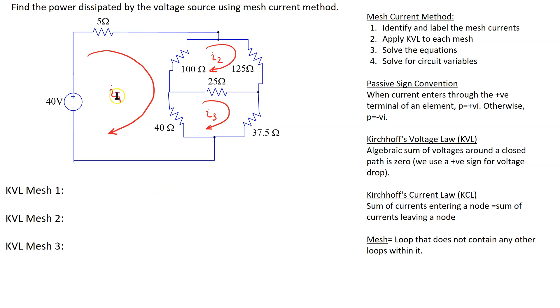Let's write the KVL equation for mesh one. In mesh one we have one, two, three, four circuit elements. We can start writing the equation from any circuit element. Let's start from the 40 volt source. We can see that mesh current I1 is entering the terminal marked minus and leaving the terminal marked plus. Going from minus to plus is a voltage rise, hence we write it with a minus sign.